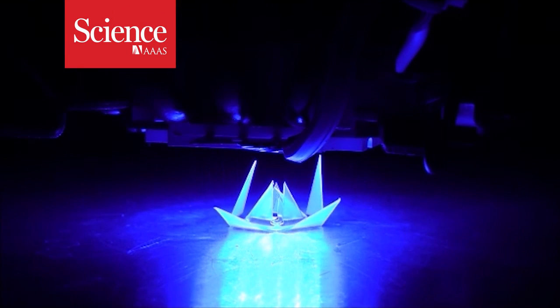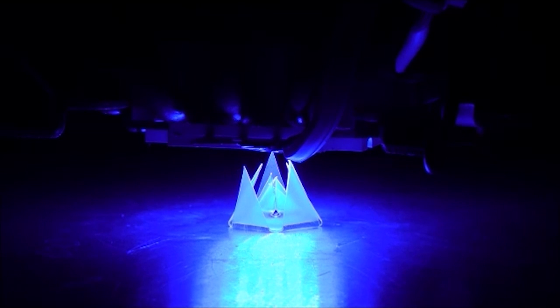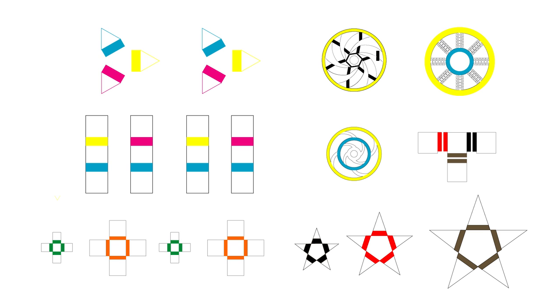These two-dimensional sheets of plastic fold themselves into 3D shapes when activated by light. Researchers printed a series of shapes onto sheets of shrink film.